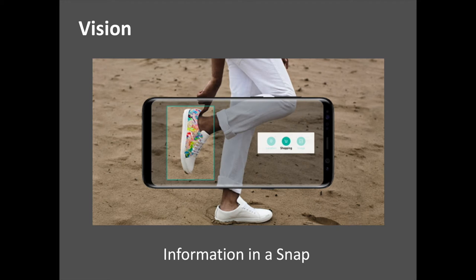Shopping is just as easy. Users can take a photo of an item such as a watch or a book and use vision to locate and purchase it online. Users can also launch vision for more in-depth searching of products they see in their phone's gallery or while browsing Samsung Internet.